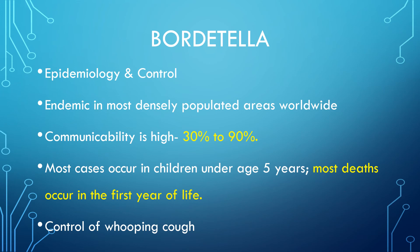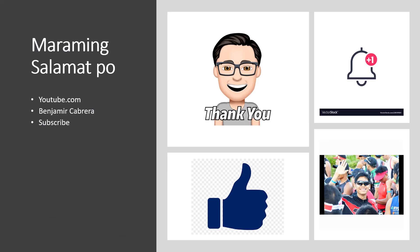Whooping cough is endemic in the most densely populated areas of the world, with high communicability ranging from 30 to 90 percent. Most cases occur in children under five years, and most deaths occur in the first year of life. Control of whooping cough is achieved mainly through adequate active immunization of all infants.